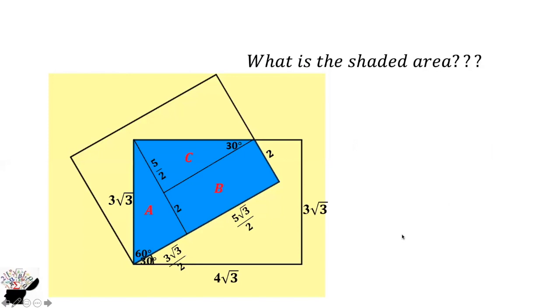Similarly, we can find B. The length is 5√3/2 times 2, and we get 5√3.